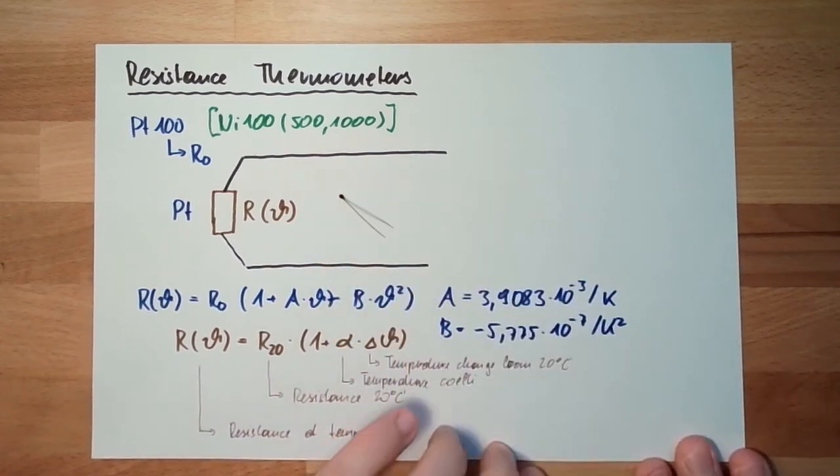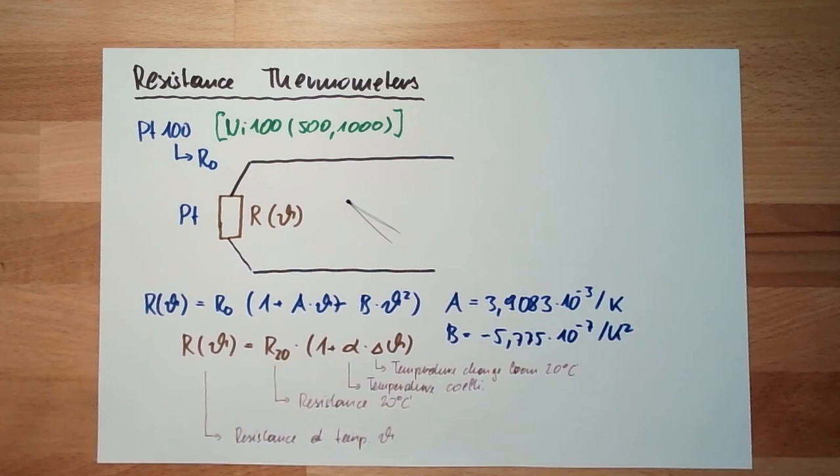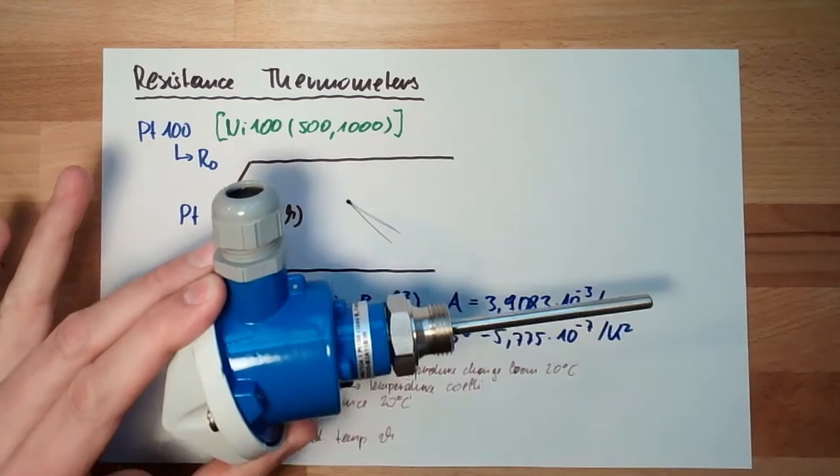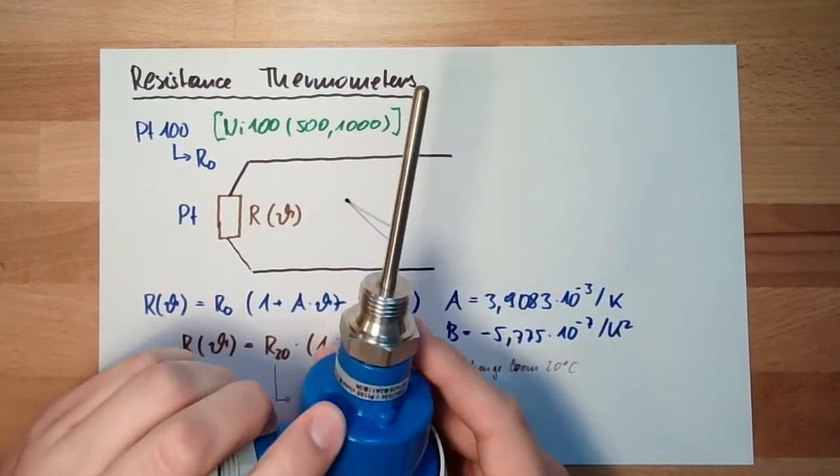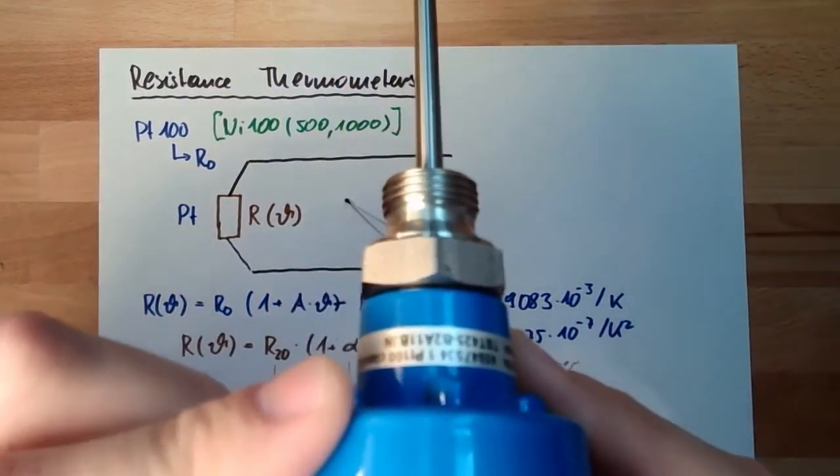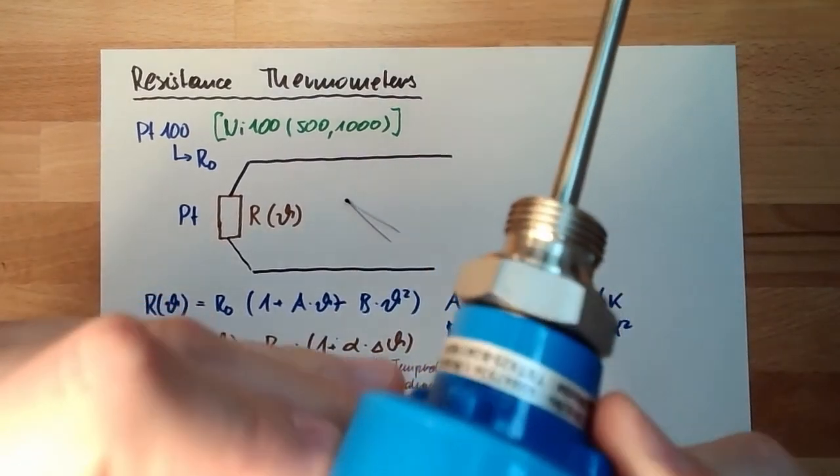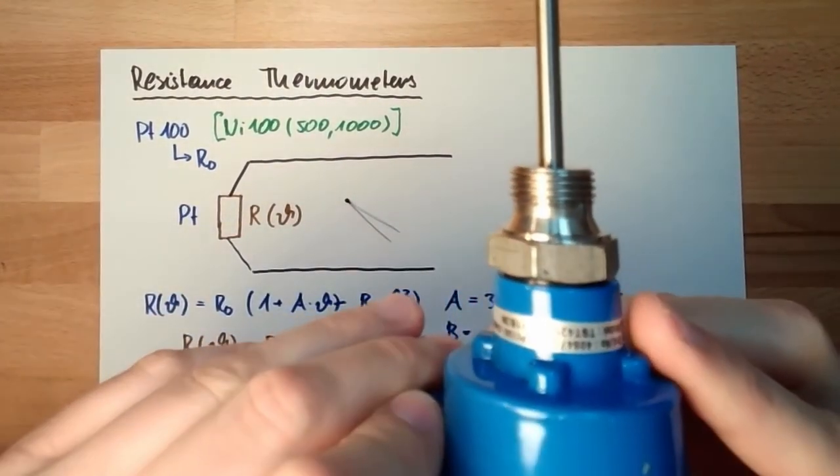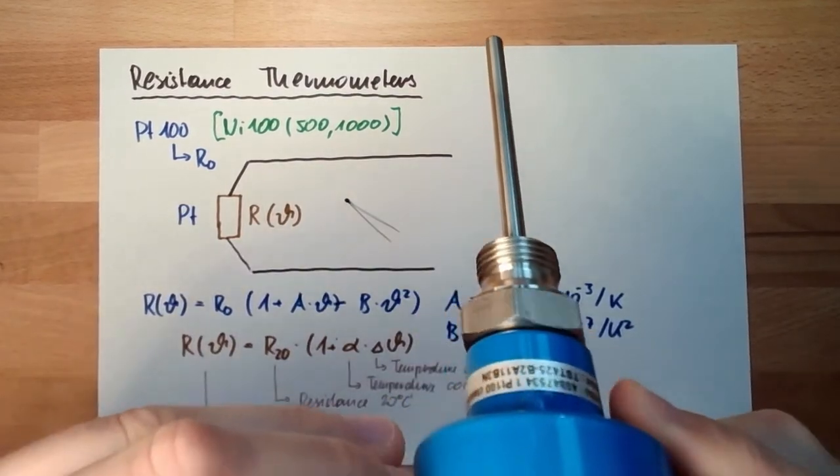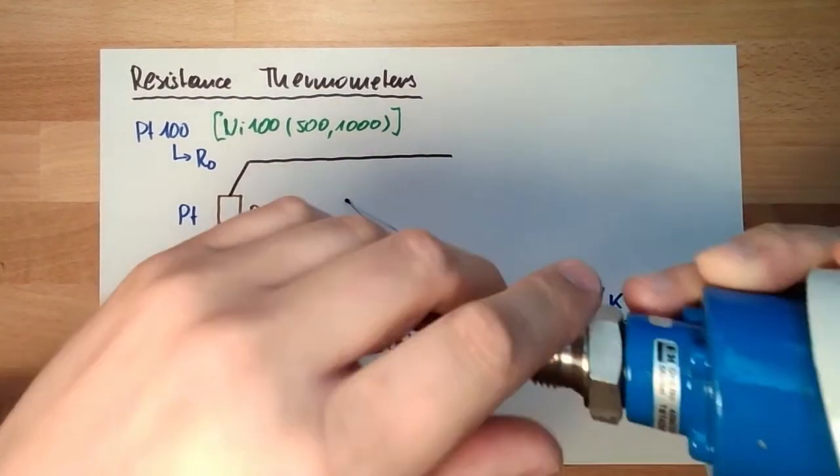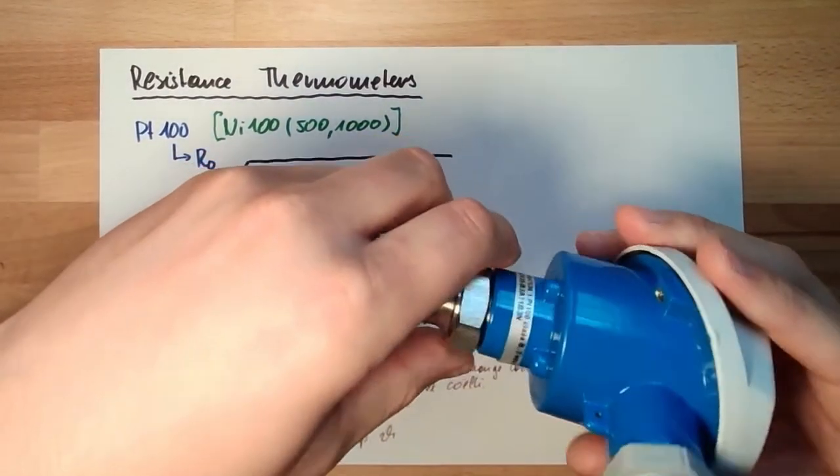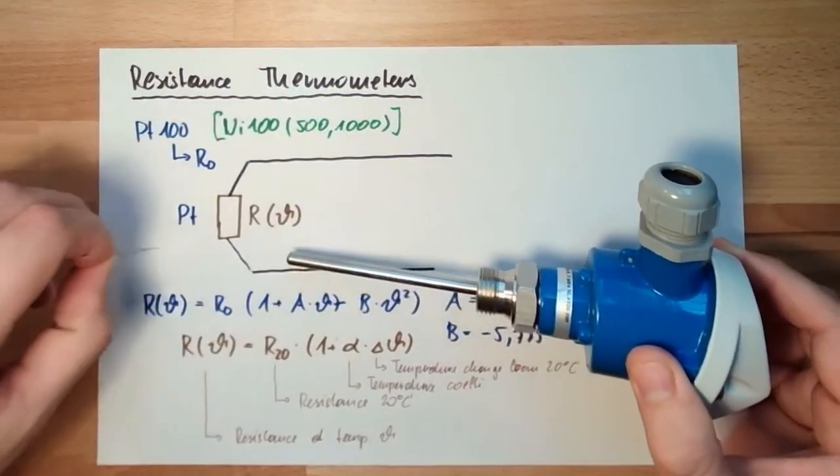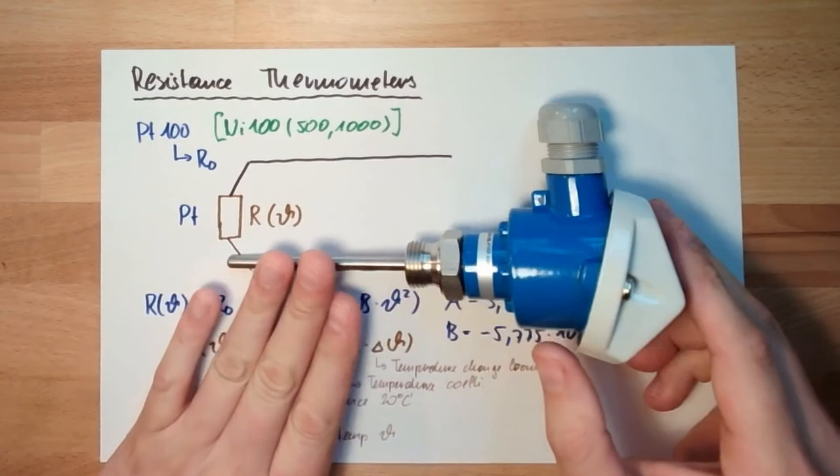This is such an example NTC. What is then a totally different story is a real measurement device. This looks like this. Here you can see this thing is a PT100. It's a PT100 measurement and there is also written class B and three wire connection.